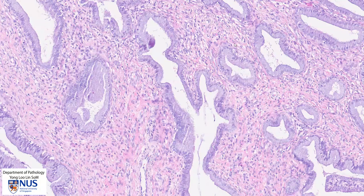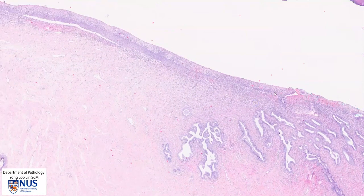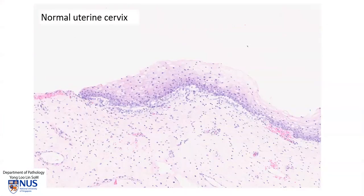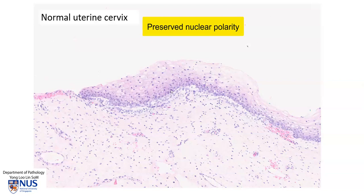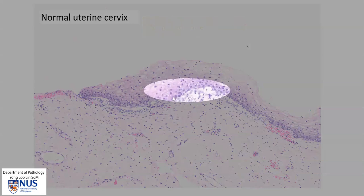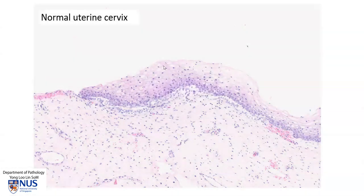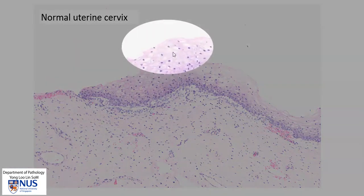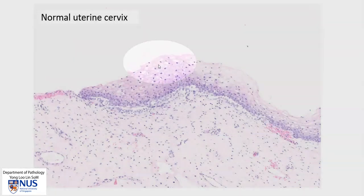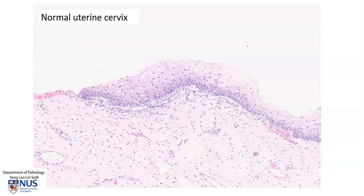Now let's look at the surface epithelium. The entire length of the ectocervix in this particular section is abnormal, but first let me show you what normal ectocervical epithelium looks like. In the normal uterine cervix, the ectocervical epithelium is non-keratinizing stratified squamous epithelium. This example shows polarity of the nuclei — the basal-most nuclei tend to be darker with higher NC ratios, whereas towards the surface the nuclei get smaller, the cells appear more flattened with more cytoplasm, hence a lower NC ratio. This maturation is a good sign that we are not looking at neoplastic squamous epithelium. This is the benign cervix with maturation and preservation of nuclear polarity.